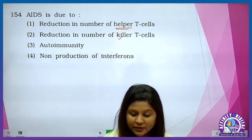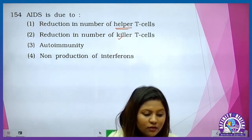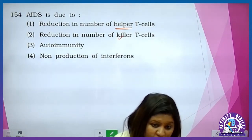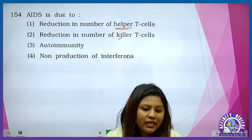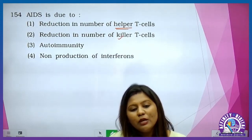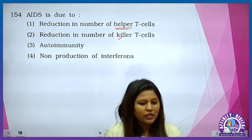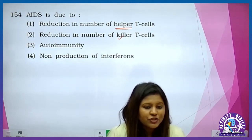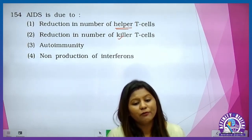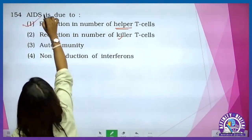Ab wo usko reduce karke 200 tak le jata hai. Helper T cell actually helps B lymphocyte to proliferate and to become effective. Ab jab helper hi nahi rahega, to B cell activate nahi ho paata, proliferate nahi kar paata, aur pathogen se lad nahi sakta. That's why HIV infected jo person hota hai, wo HIV ke wajah se nahi marte — wo immunodeficiency ke wajah se marte hai. So the answer is one.